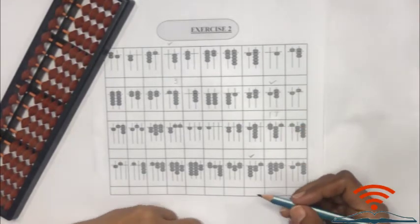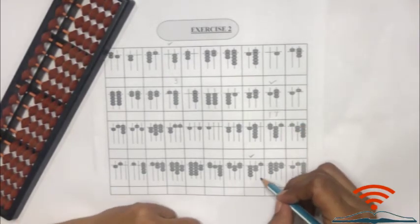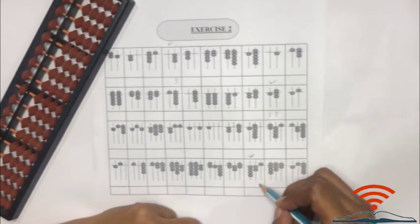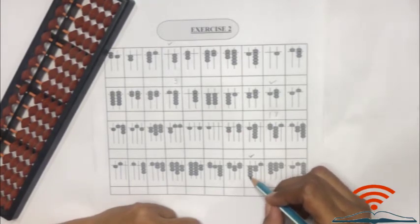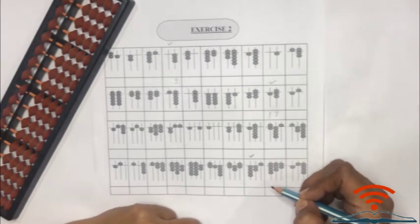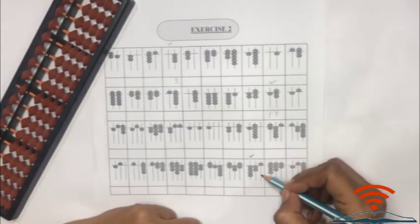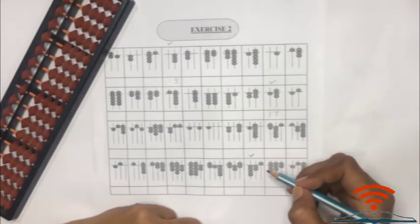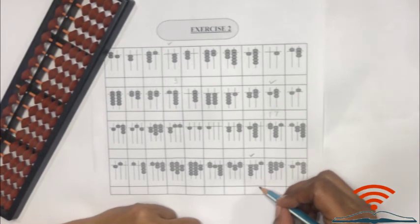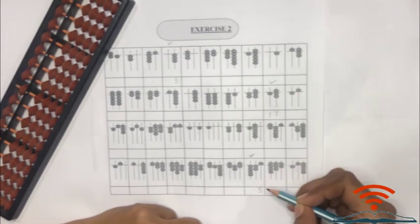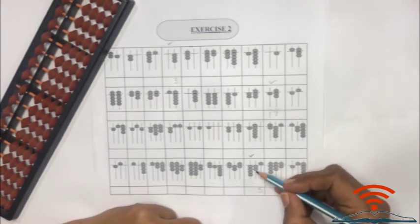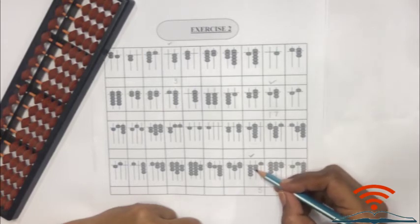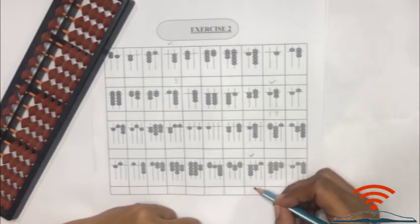Lastly, here beads are in all three rods, that is ones, tens, and hundreds rod. Check and convert first ones rod. It's five as it is above the beam. Then tens rod, 10, 20. It's 20.